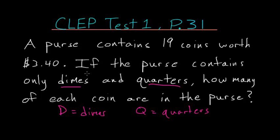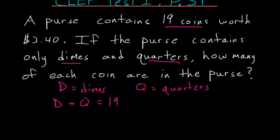So we would have one equation since we know the purse contains 19 coins. The number of dimes plus the number of quarters will equal 19, and the second equation will deal with the value of the coins.